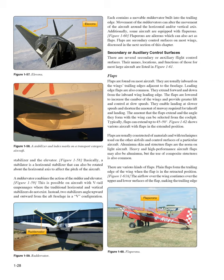Secondary or auxiliary control surfaces: there are several secondary or auxiliary flight control surfaces. Flaps are found on most aircraft, usually inboard on the wings' trailing edges adjacent to the fuselage. Leading edge flaps are also common, extending forward and down from the inboard wing leading edge. The flaps are lowered to increase the camber of the wings and provide greater lift and control at slow speeds. They enable landing at slower speeds and shorten the amount of runway required for takeoff and landing. The amount that the flaps extend and the angle they form with the wing can be selected from the cockpit; typically, flaps can extend up to 45 to 50 degrees.